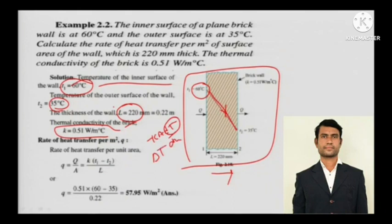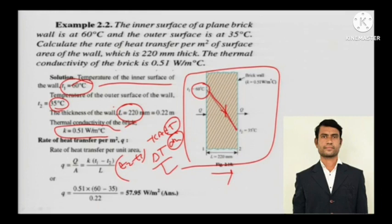So dt is actually delta T and dx is L. In previous numericals you will see T2 minus T1. You can actually multiply the minus sign inside, giving T1 minus T2 in the numerator. That is the kind of solving you can do with multiplication of the minus sign inside.